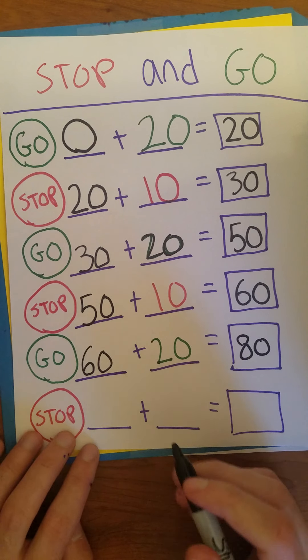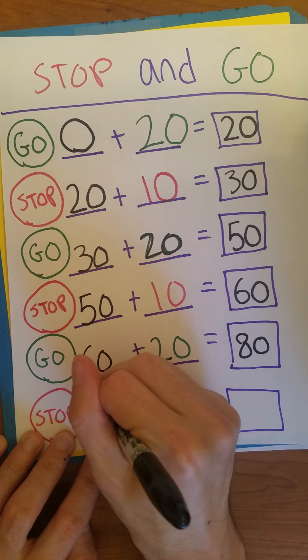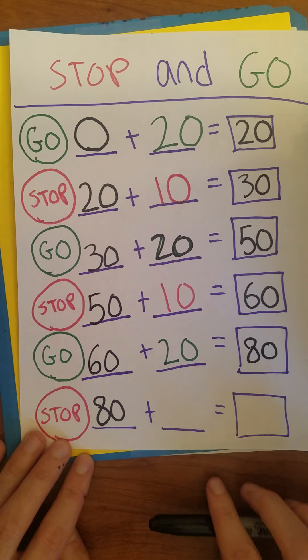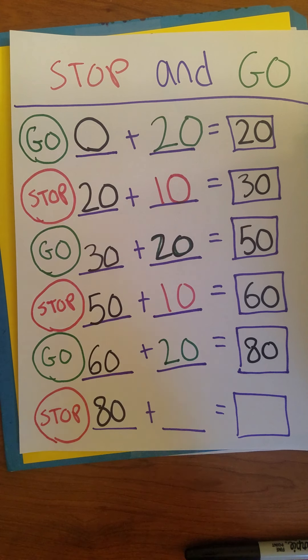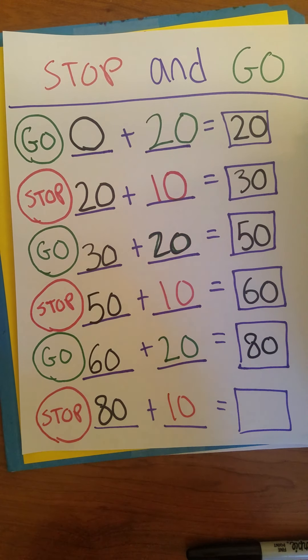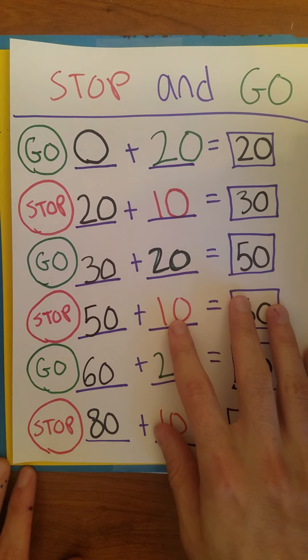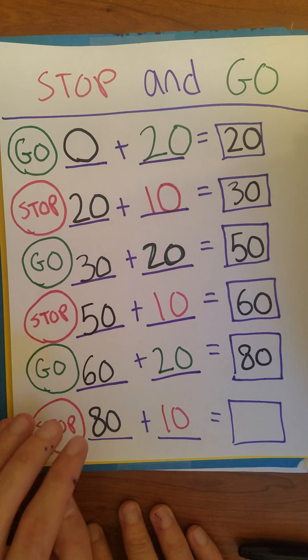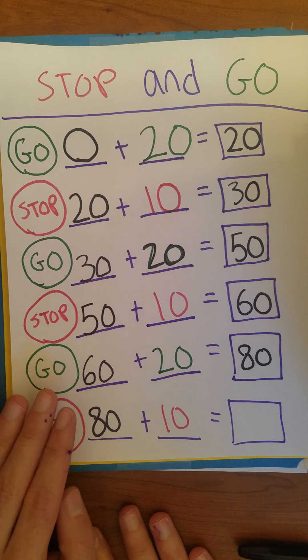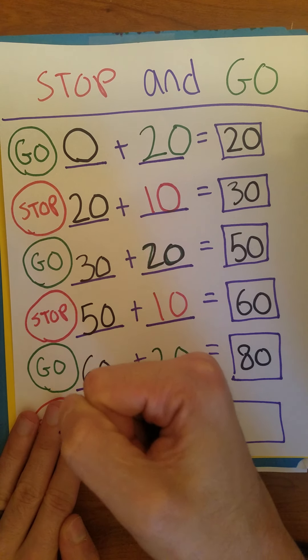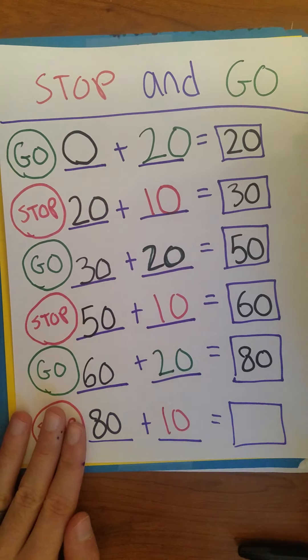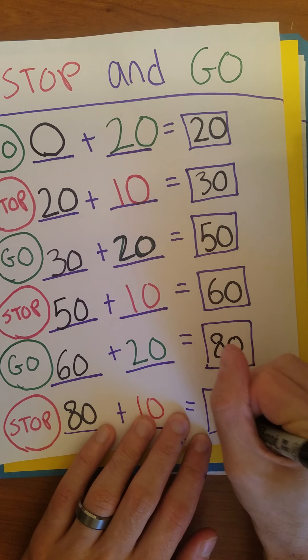And finally we are going super fast, 80 miles an hour, we have our stop sign, so we can only add 10. Maybe you've gotten the hang of this now where you can just count right up from the place that we left off, but I'm going to go back to the beginning. 10, 20, 30, 40, 50, 60, 70, 80. One more 10, 90. 80 plus 10 equals 90.